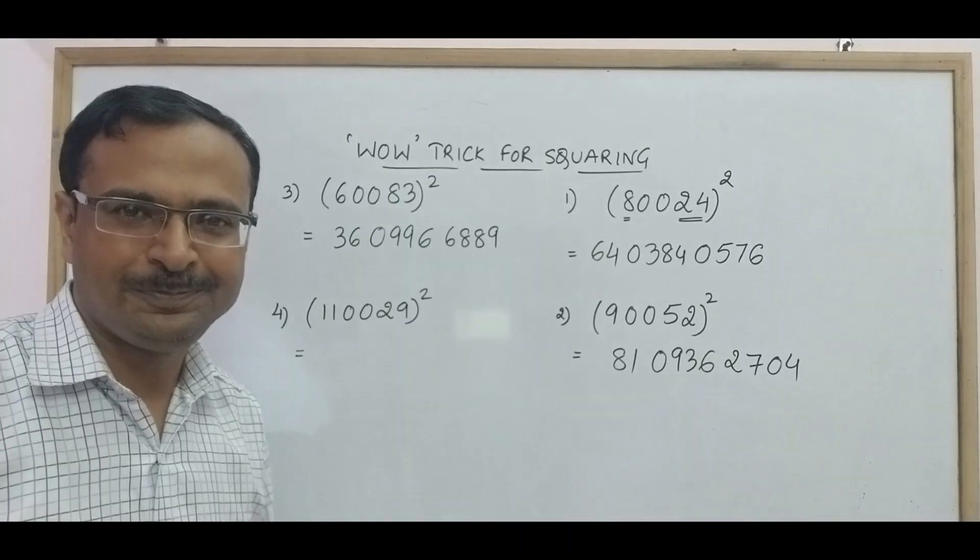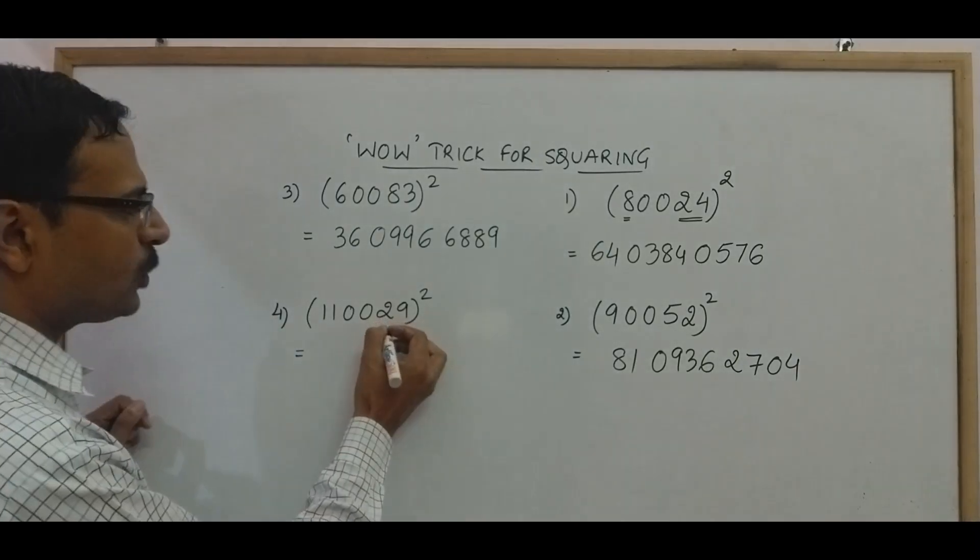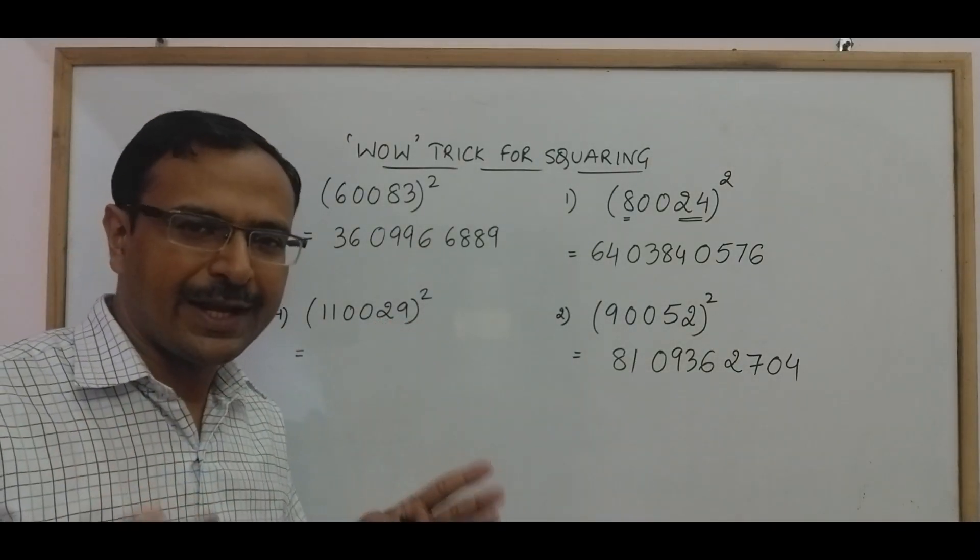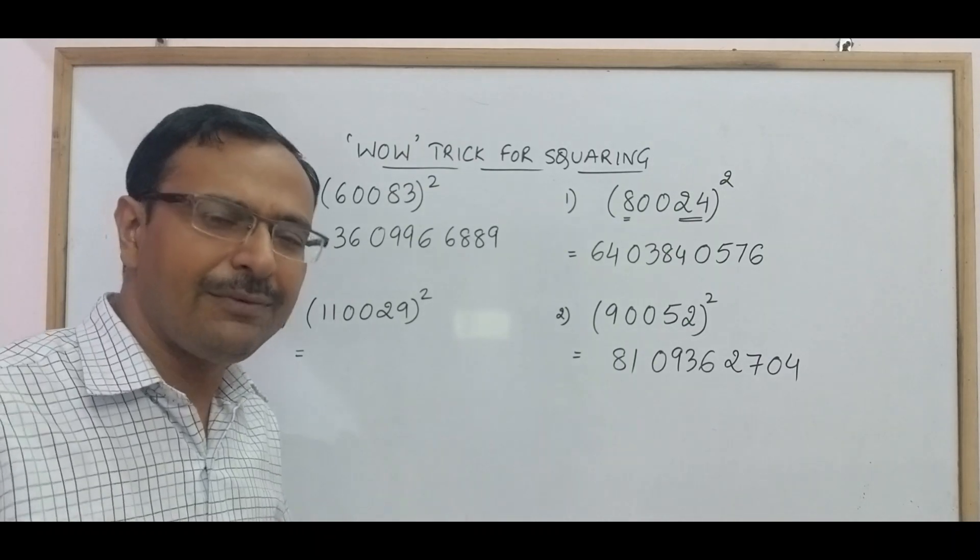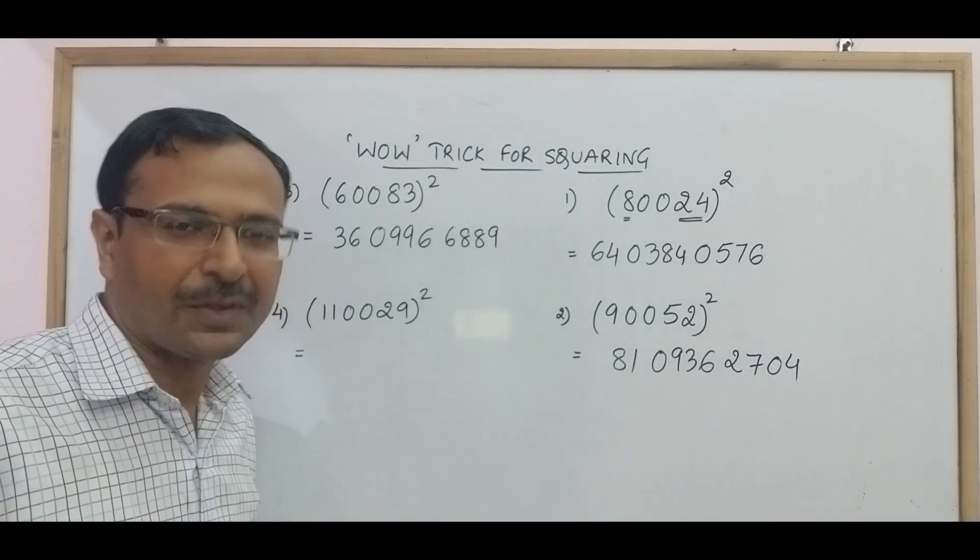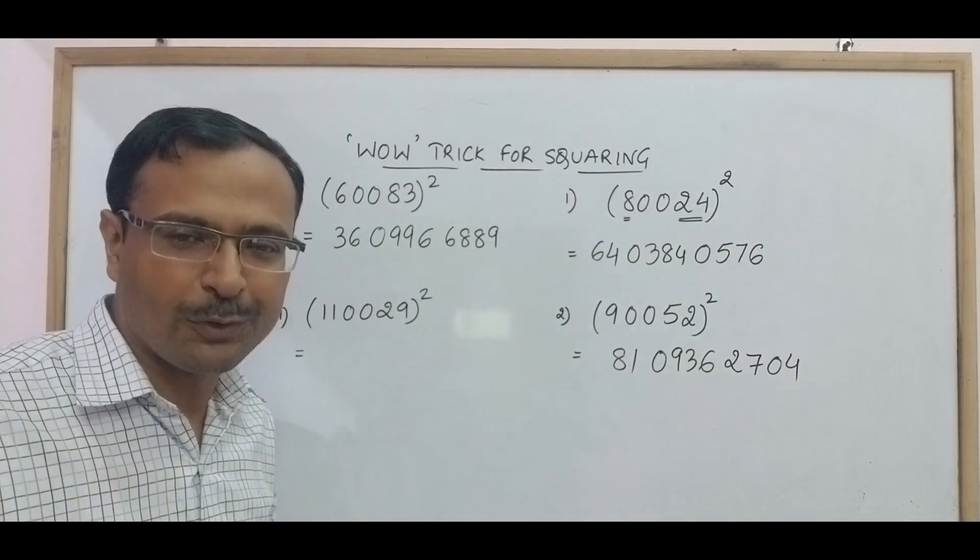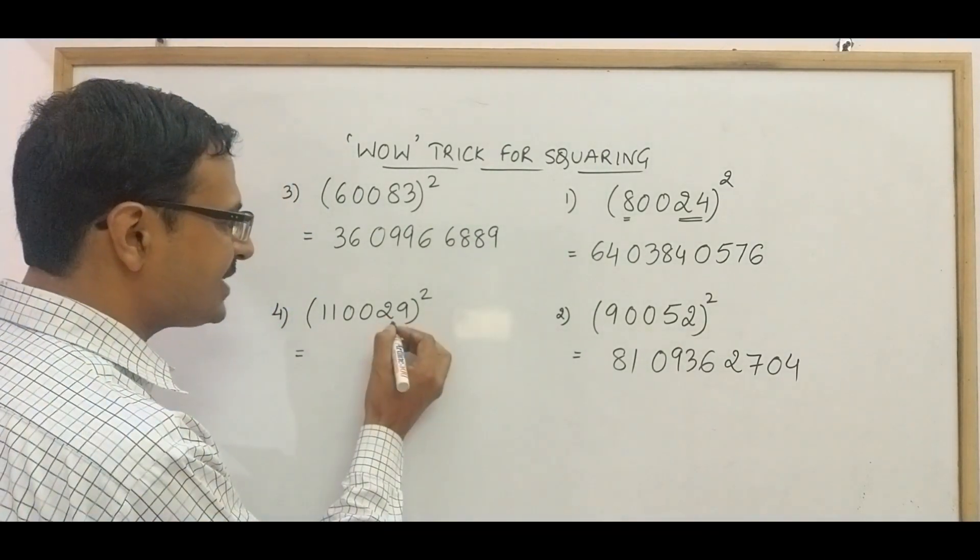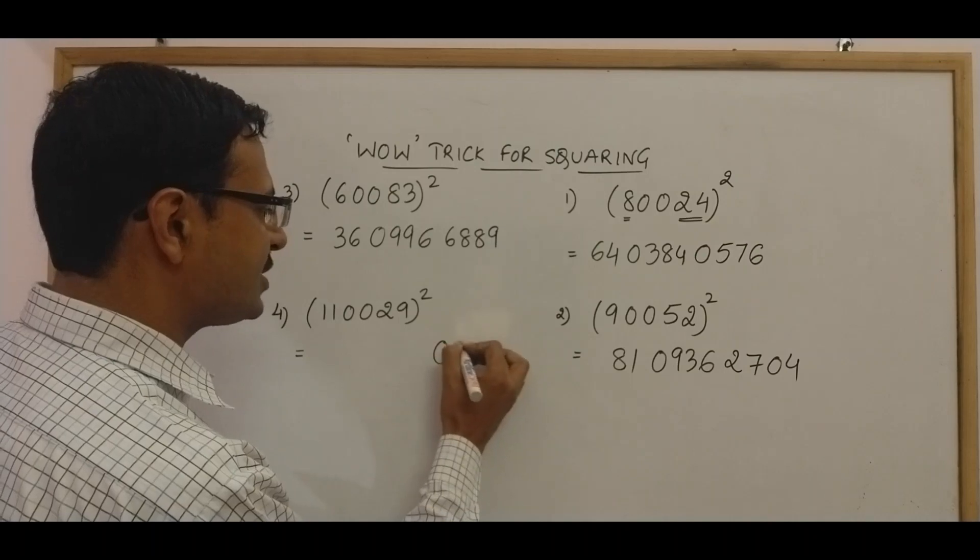Let's see a 6 digit number now. Here we have 29. I know that the square of 29 is 841, even if you don't know it, go for the vertical and crosswise method. Vedic Maths has given you such beautiful methods. So 29 is 841, means I will write 0841.